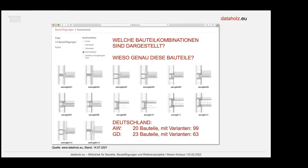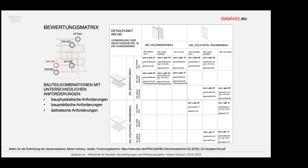Im Rahmen des Forschungsberichts mussten wir uns überlegen, welche Bauteile wir mit welchen fügen. In Deutschland gibt es 20 Außenwandbauteile, mit Untervarianten sind es 99. Geschossdecken: 23 Bauteile, mit Untervarianten 63. Für jeden Detailpunkt haben wir eine Matrix erstellt, um Kombinationsmöglichkeiten aufzuzeigen. Grundlegend wurde unterschieden in Massivbauteile und Holztafel- beziehungsweise Holzrahmenbauteile, die mit horizontalen Bauteilen gefügt wurden – mit unterschiedlichen bauphysikalischen und auch ästhetischen Anforderungen.